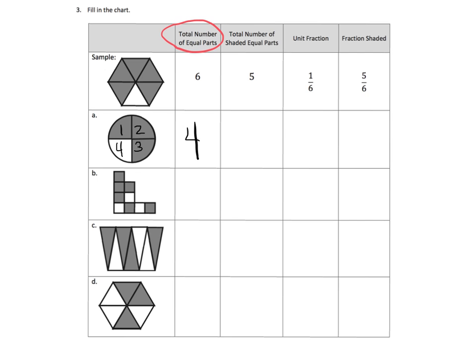Now, what's the total number of shaded equal parts? Well, we can see that's three. Three of those parts have been shaded in. So the unit fraction is one-fourth, because these are quarters. And then what is the fraction that's shaded? And we're assuming that the dark part is the shaded part. And the answer is three-quarters. So let's jump straight down to C.